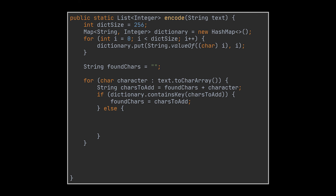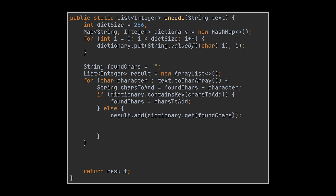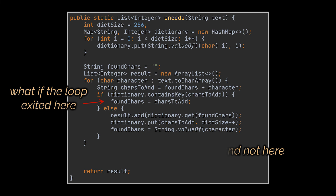For each character of our input text, we check if the concatenation of this character and the ones following it are present in the map. To include multiple characters in the same check, we create a string variable initialized to an empty string, then check the concatenation of both this empty string and the character. If the character is found, the empty string is updated to store the actual character, so that in the next iteration the variable represents both the previous and the current characters. As soon as we stop finding an entry in the dictionary, we add to the output the code representing the previous character, add a new dictionary entry for the characters that weren't found, and reset the string to point only to the current character.